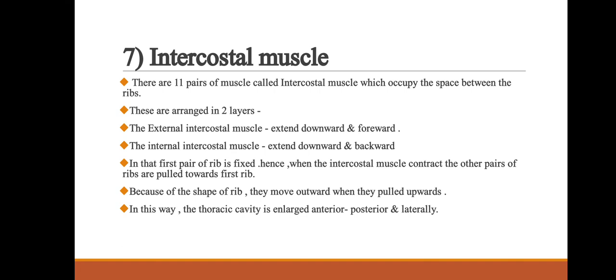Next, we discuss intercostal muscles. There are 11 pairs of muscles called intercostal muscles, which occupy the space between the ribs. They are arranged in two layers: first, the external intercostal muscles that extend downward to the ribs; second, the internal intercostal muscles that extend downward and backward. The first pair of ribs is fixed; when the intercostal muscles contract, the other pairs of ribs are pulled toward the first rib. Because of the shape of the ribs, they move outward when pulled upward, enlarging the thoracic cavity anteriorly, posteriorly, and laterally.